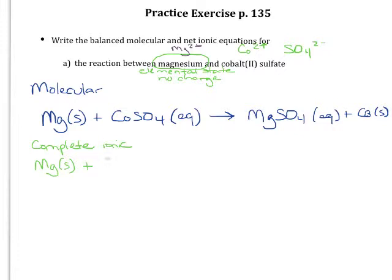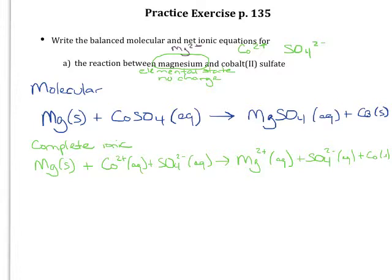So I'm going to write that as my cobalt ion, which is aqueous, and my sulfate ion, which is also aqueous. My magnesium sulfate is an ionic compound. That's a strong electrolyte. So I'm also going to write that as its ions. But I'm going to leave that elemental cobalt alone because it doesn't have a charge. It's not an electrolyte. So notice throughout all this, I still have balanced reactions. I didn't need any coefficients for this to balance.